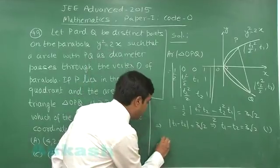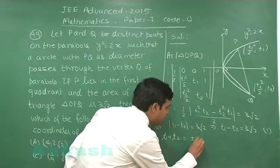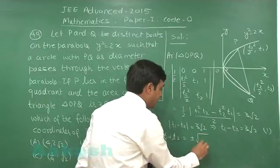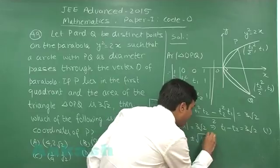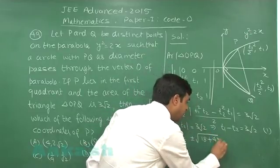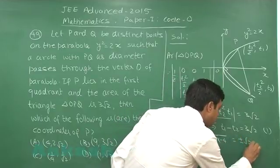Now, looking for the term t1 plus t2 this time, we can write plus minus both t1 minus t2 whole square that is 18 plus 4 into t1 t2 that is minus 4 giving me plus minus root 2.